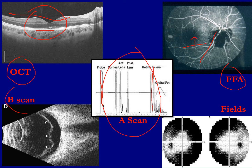This is the B scan, which is a two-dimensional test. You use it when there's an opaque lens and you cannot see the retina. The B scan can give you the picture behind the opaque cornea or behind the white lens. Like in this picture, you can see the retina is detached — you cannot otherwise see that.